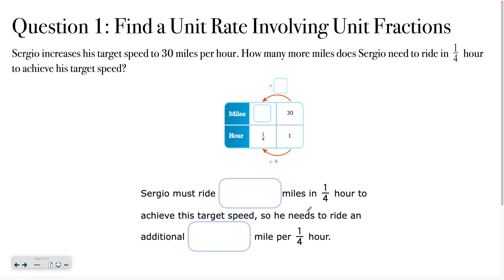The second one is for you to try on your own, but I'll give you a little hint. Sergio increases his target speed — his goal is now 30 miles per hour. He wants to know how many more miles he needs to ride in a quarter of an hour to achieve that target speed. I've included a little table to help. You can see 30 miles — we're looking for how far he has to go in a quarter hour — but we know he ultimately wants 30 miles in one hour. To go from one to one fourth, you would divide by four. Take a minute, fill in the blanks including the paragraph below, and see if you get the same answers.